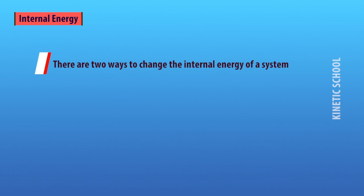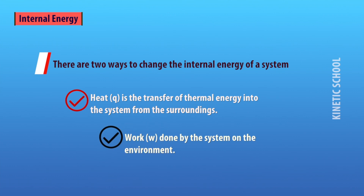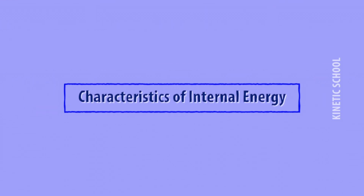There are two ways to change the internal energy of a system: heat, which is the transfer of thermal energy into the system from the surroundings, and work done by the system on the environment.